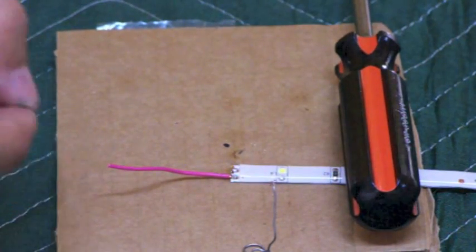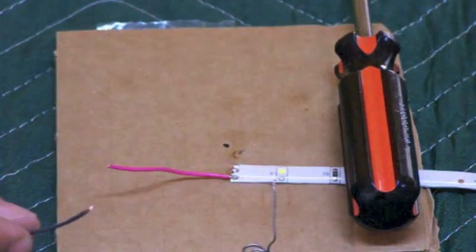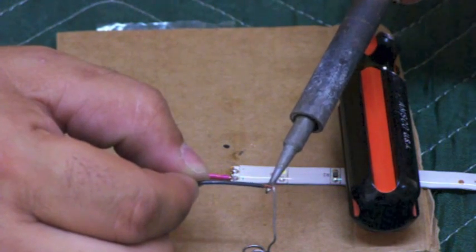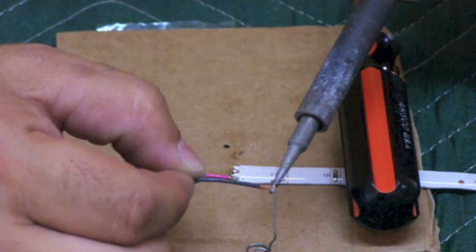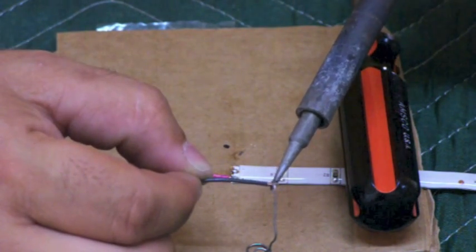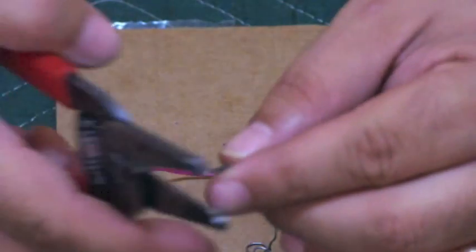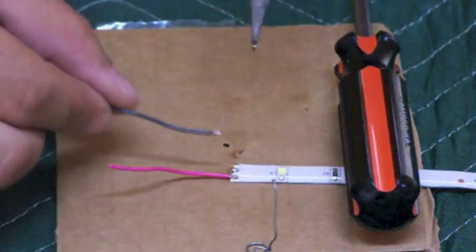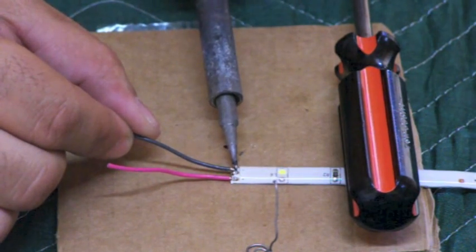I'm going to do the same thing with the black. Strip the little ends off. Get some heat on that cable. Just like that. Now I stripped a little too much, so I'm just going to snip it, make that connector a little smaller. Don't need it that big. I'm going to go back on here, lay it down, put a little heat on it.